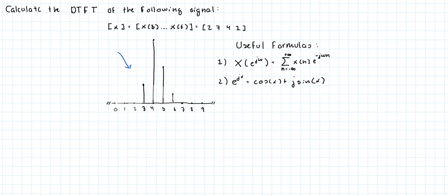The two useful formulas are the DTFT formula, which is the summation from n equals minus infinity to plus infinity of x(n) times the exponential of minus j w n, where j is complex. Also, we're going to use Euler's formula: e to the j x equals cosine of x plus j times sine of x.